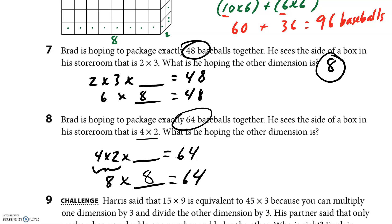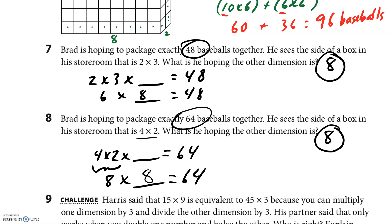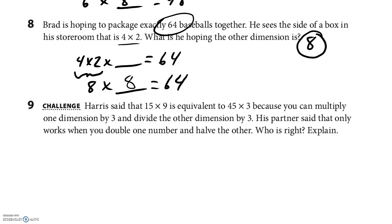The challenge: I'm going to give some hints, I'm not going to explain it completely. Harris said that 15 times 9 is equivalent to 45 times 3 because you can multiply one dimension by 3 and divide the other dimension by 3. His partner said that only works when you double one number and halve the other. Who is right? We've been working on doubling and halving, so can you triple and then find a third? Harris is saying 15 times 9 is the same as 45 times 3, and he's using multiply by 3 and divide by 3 as his reasoning.